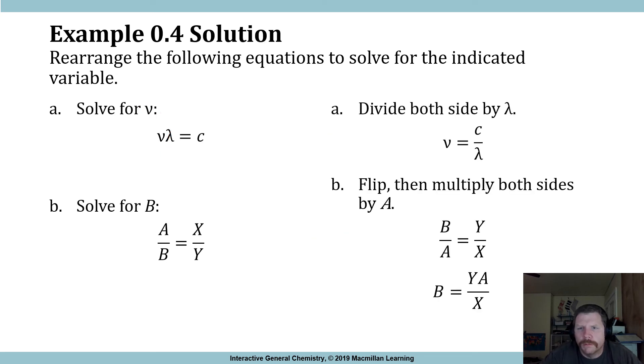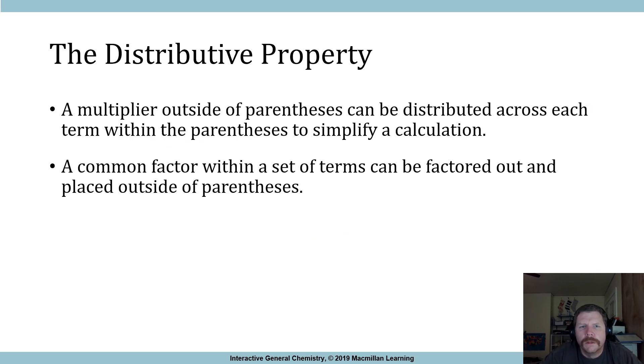That's what I did. The distributive property: a multiplier outside of parentheses can be distributed across each term within the parentheses to simplify a calculation. A common factor within a set of terms can be factored out and placed outside the parentheses. This is something that we're going to see in the next segment when we talk about percentages, but this will be something that is covered quite a bit over the course of the semester. And whenever we introduce this, I'm not going to say like remember the distributive property.